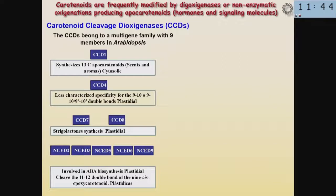Carotenoids, as I mentioned, are the source of many signals. In many cases these signals are produced by the cleavage of carotenoids, and the enzymes responsible for producing these molecules — which we call apocarotenoids — are the carotenoid cleavage dioxygenases. In Arabidopsis, there are nine genes in this family. Five have been shown to produce the hormone ABA, two others produce strigolactone involved in branching of plants, and there were two others that had not been analyzed.